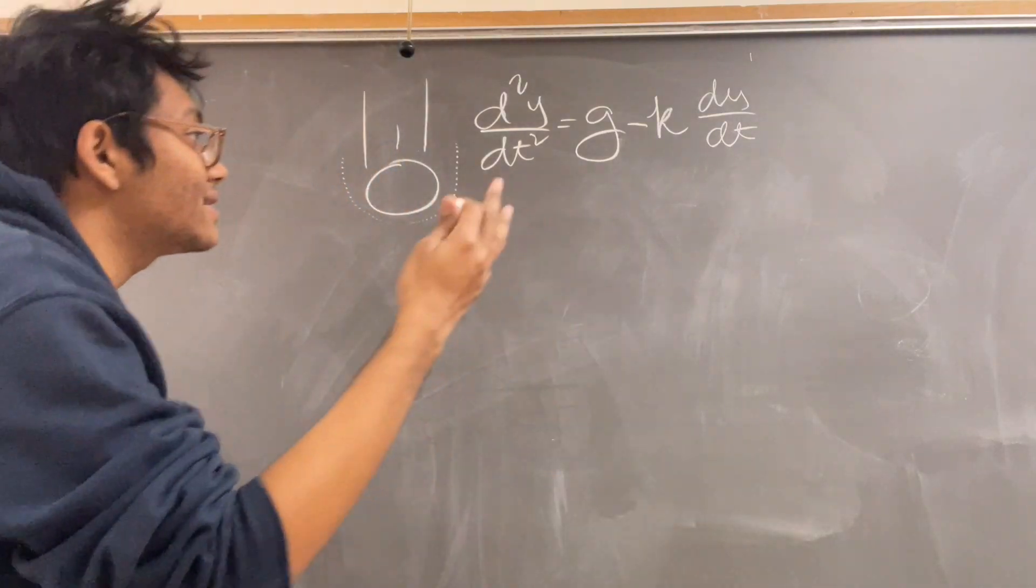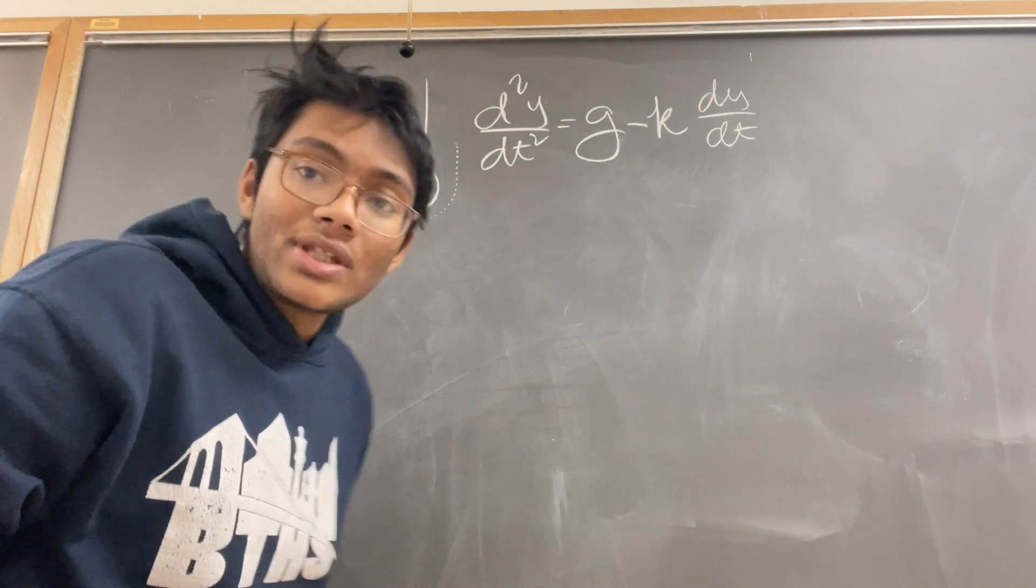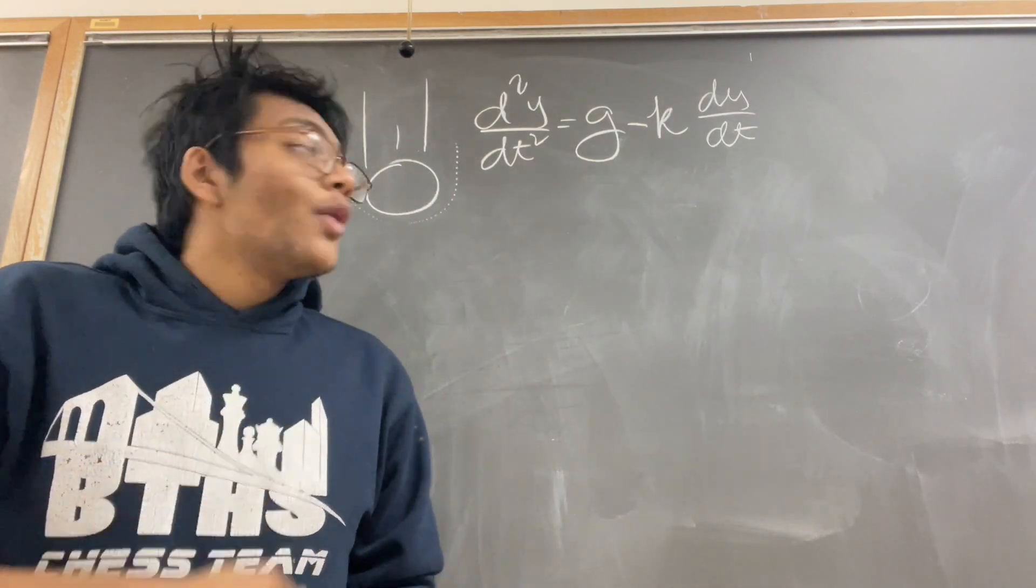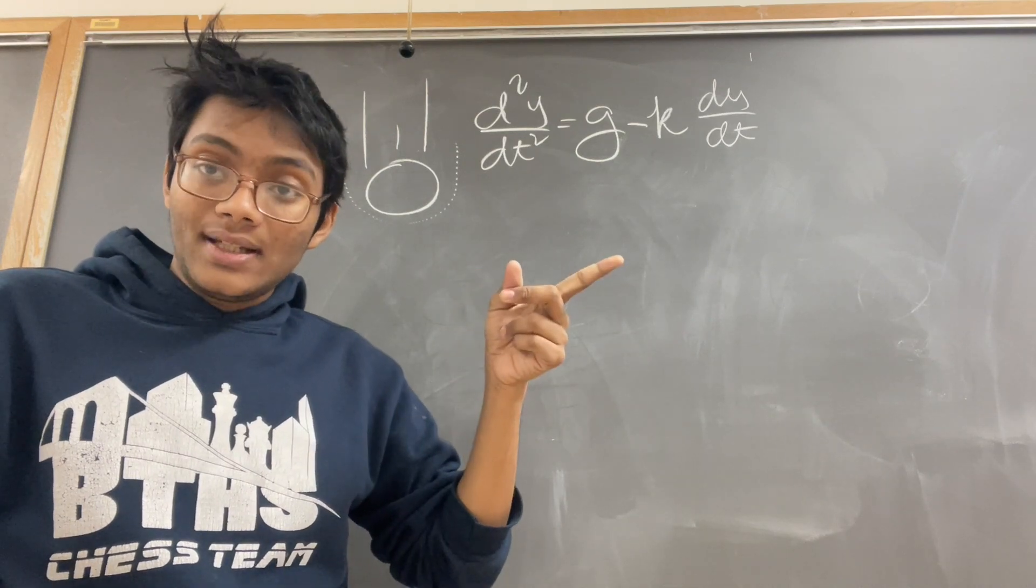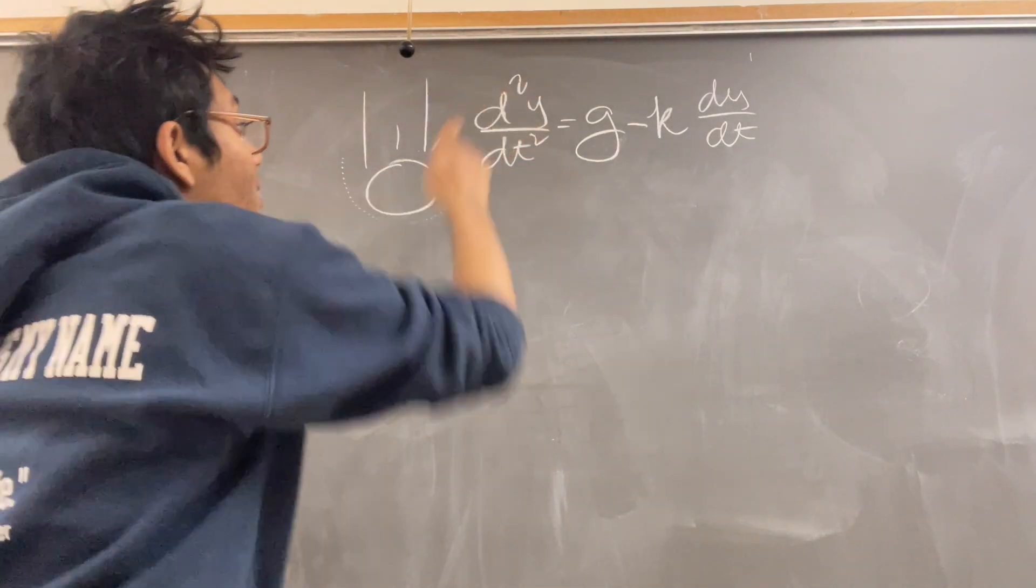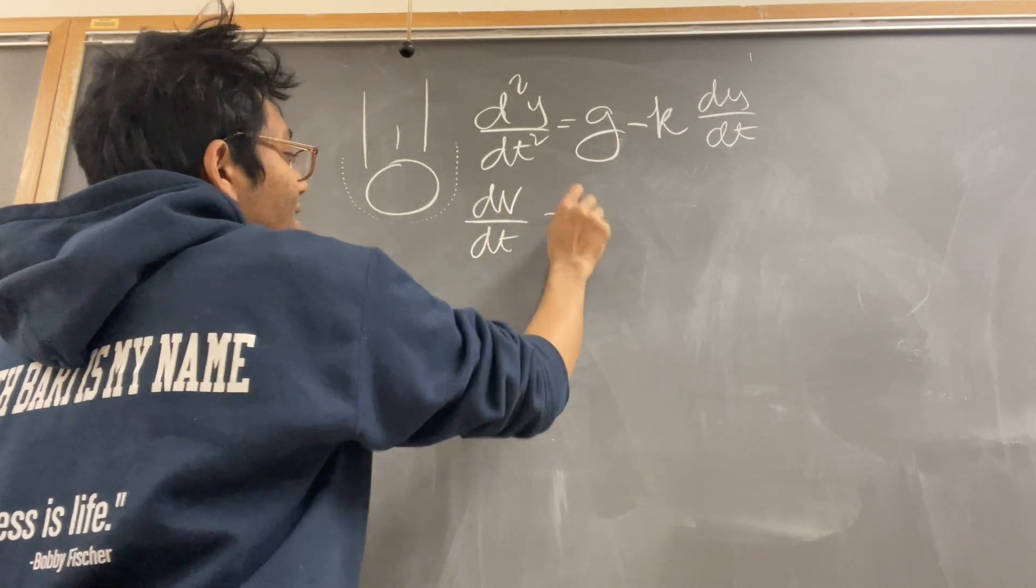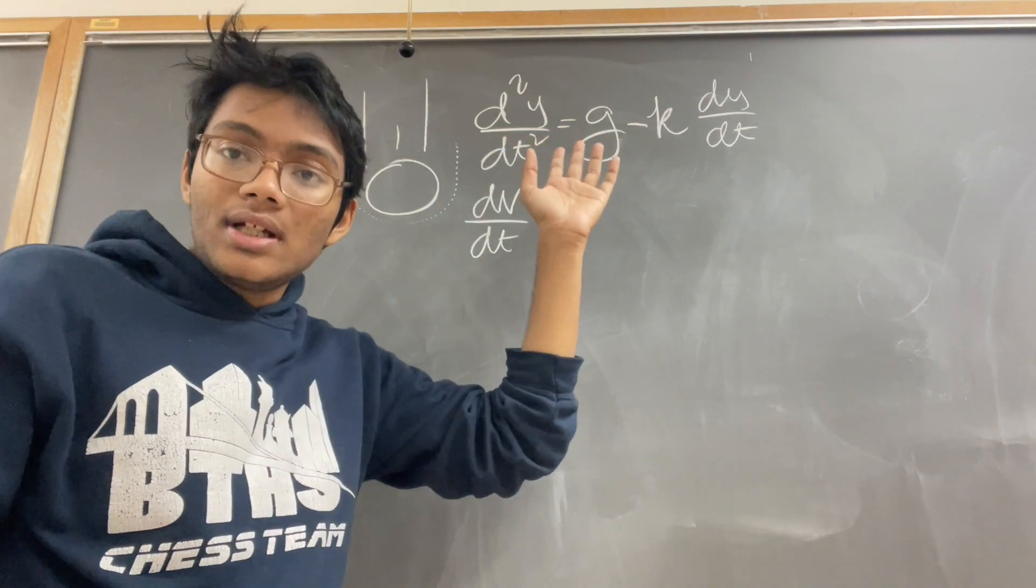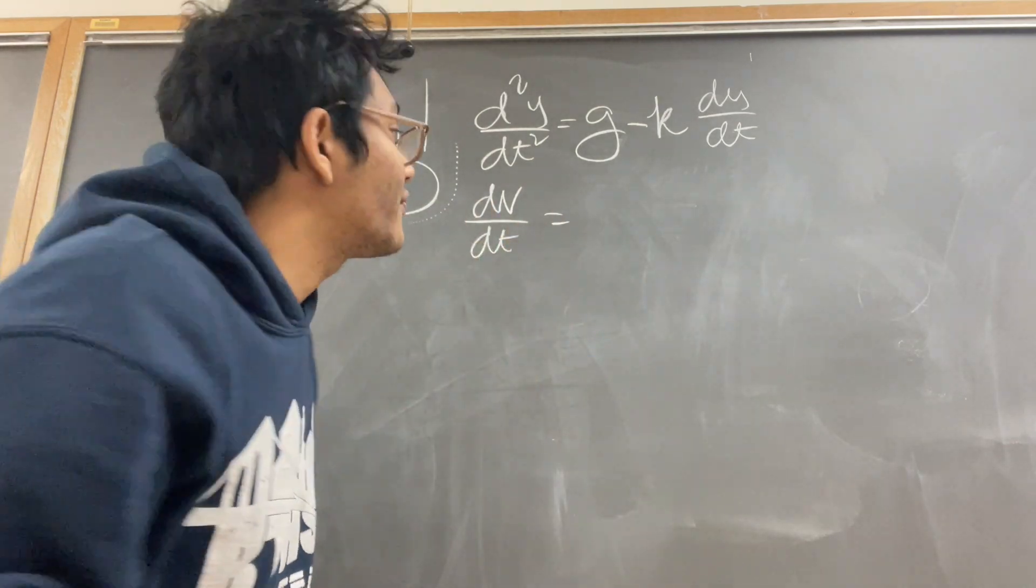And now, all that's remaining to do is solve for v. You say, where is v? Ah, well, notice this is a second-order differential equation. Or is it? It's not. If you replace d²y/dt² by dv/dt, right? Because the change in the second derivative of the position is simply the first derivative of velocity.